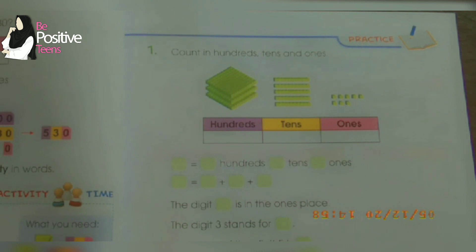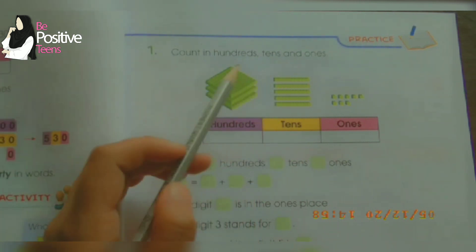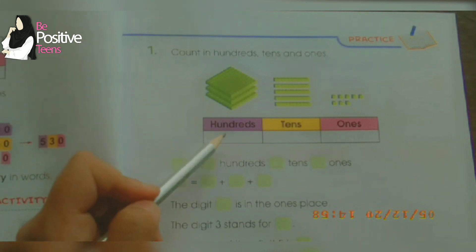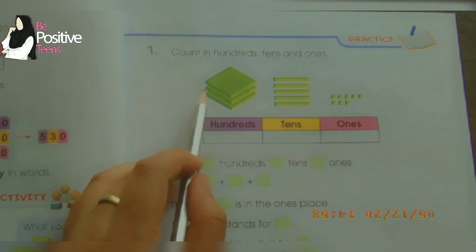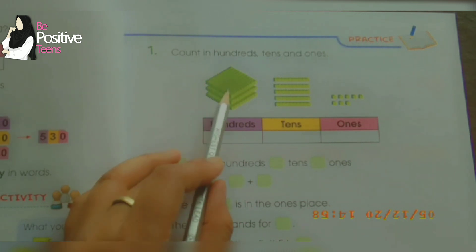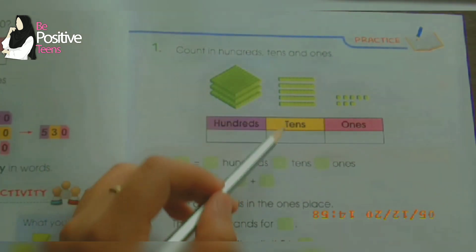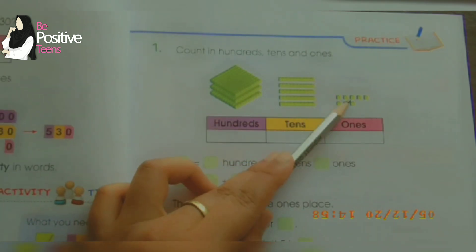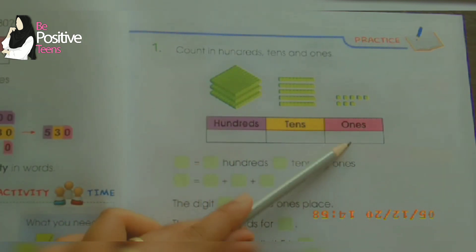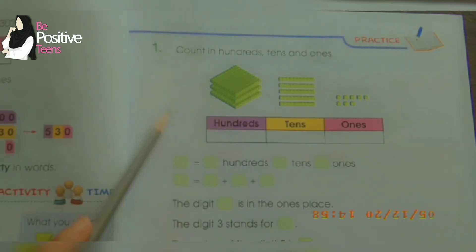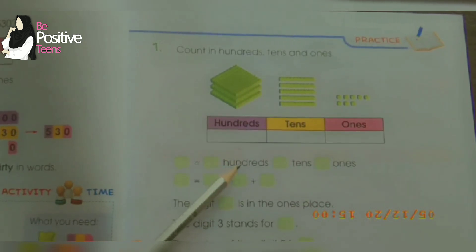We are leaving the last activity on page number seven as it has to be done in school. Moving to page number eight, number one: count the hundreds, tens, and ones. We have to count these bars and write in the correct place. How many bars of hundreds are there? One, two, three — three bars of hundreds, so we write three. There are one, two, three, four, five bars of tens — write five. And one, two, three, four, five, six, seven, eight — eight ones. Three hundreds, five tens, and eight ones.